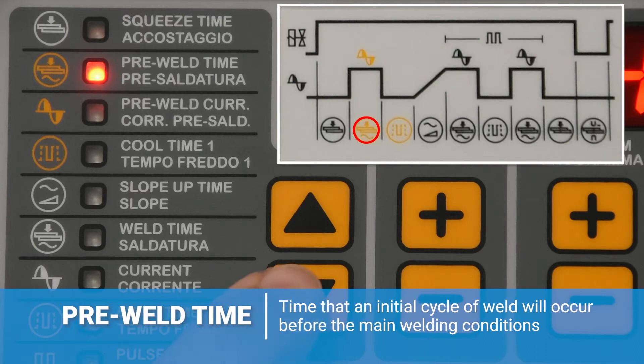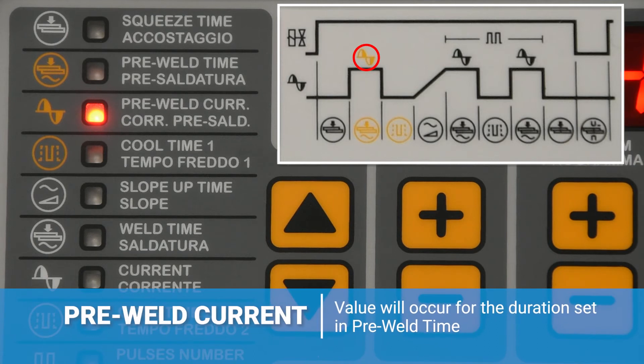The next value is the pre-weld current and this can be set between 1 and 99 percent of the maximum output of the system. This value will occur for the amount of time set in the pre-weld condition.